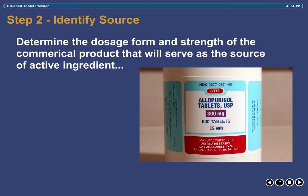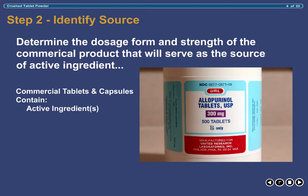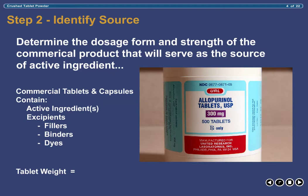Before proceeding, it is important to realize that commercially prepared tablets and capsules are rarely comprised of the active ingredient alone. More often than not, the commercially available tablet or capsule contains active ingredient along with excipients. These excipients are inert materials such as fillers, binders, and dyes that are combined with the active ingredient in order to formulate it into tablet or capsule form. Therefore, if you were to weigh a commercially available tablet, the weight obtained would be the sum of the active ingredient plus the excipients.